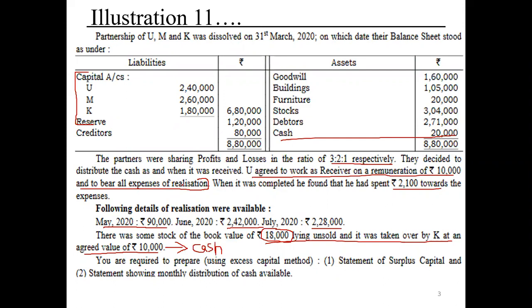Regarding realization expenses: U agreed to work as a receiver and bear all expenses for the remuneration of 10,000. When realization was completed, he found he had spent rupees 2,500 towards expenses, so no separate adjustment is needed.